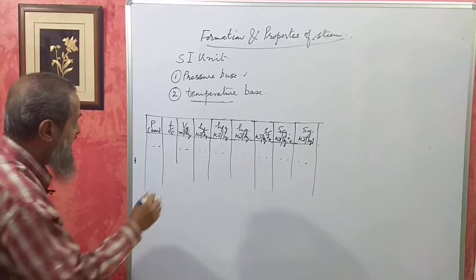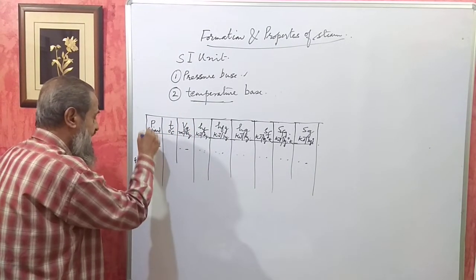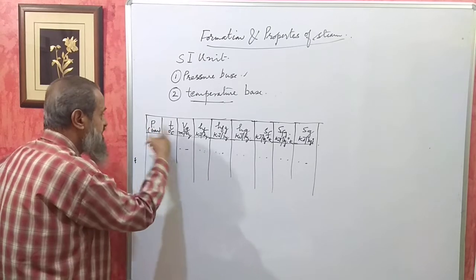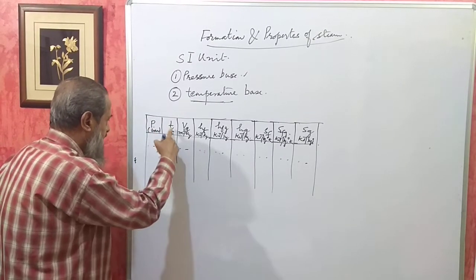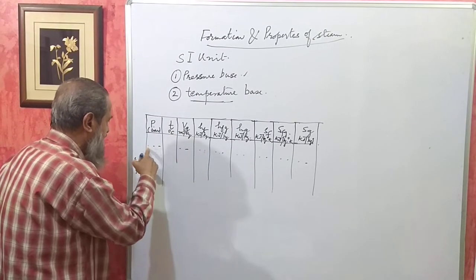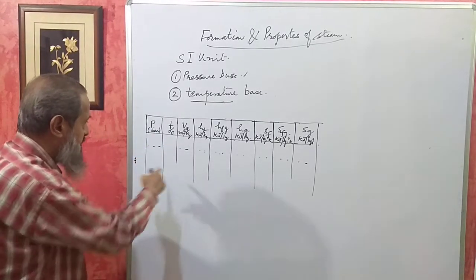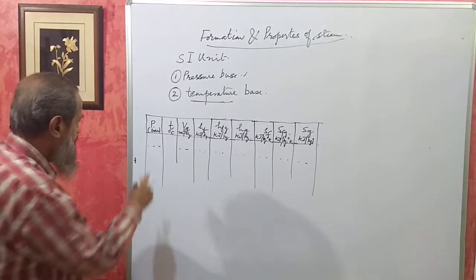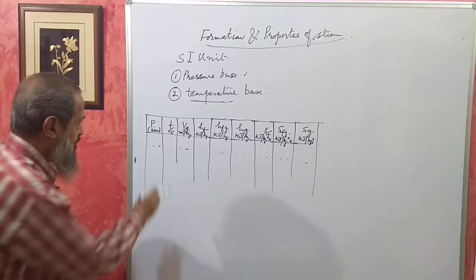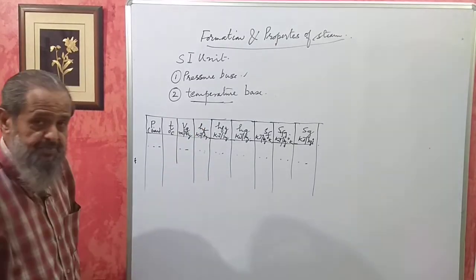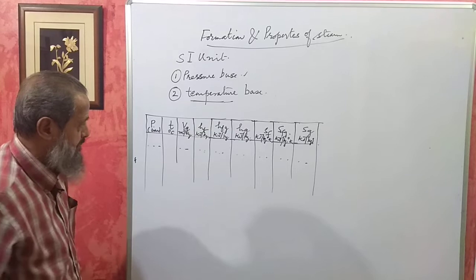If it is temperature-based, the first column will be T (saturation temperature) and the second column will be the corresponding pressure P. So these two columns get interchanged. We pick up the required values from the table to solve the problems.